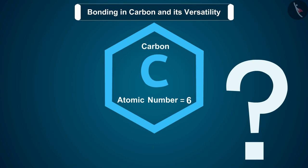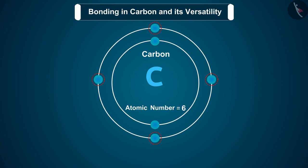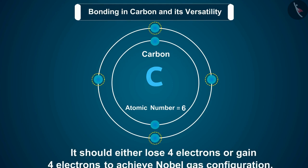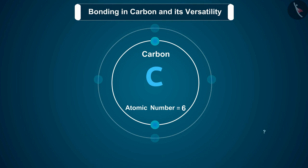Why are we studying about the electronic configuration? We are studying its electronic configuration so that we can understand the type of bonding in carbon. Carbon has four electrons in its outermost shell, so it should either lose four electrons or gain four electrons to achieve noble gas configuration, but really, is it possible?